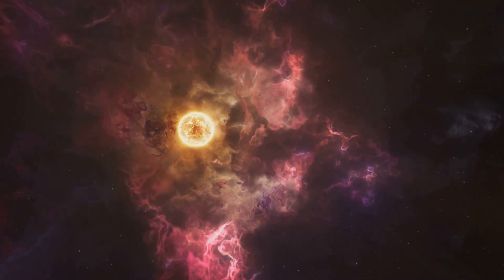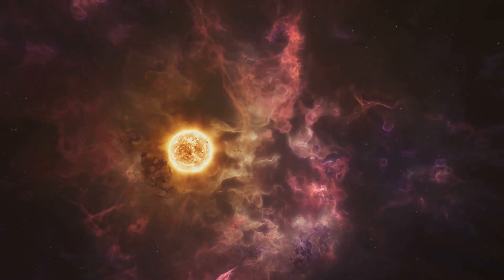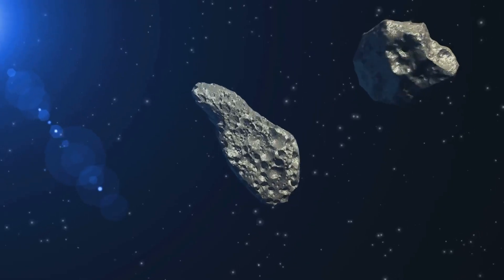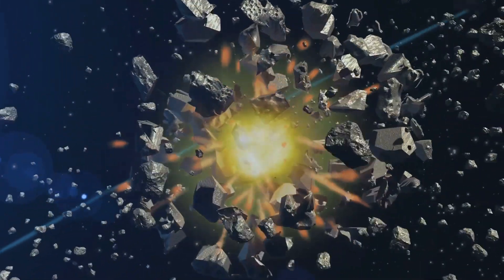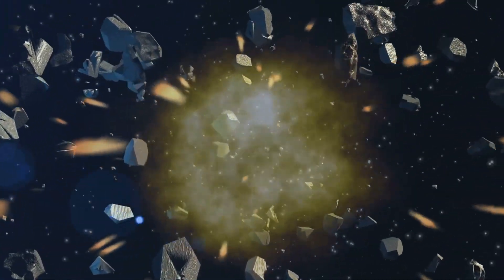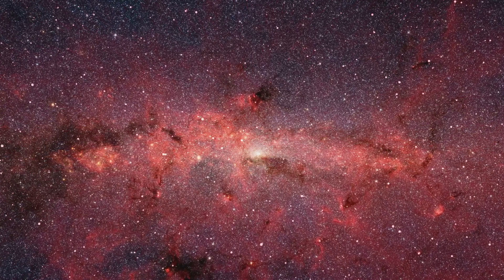Within the swirling disk around the young sun, a ballet of cosmic dust particles began. These particles, remnants of the original nebula, collided with each other. Electrostatic forces caused them to stick together, forming larger clumps.